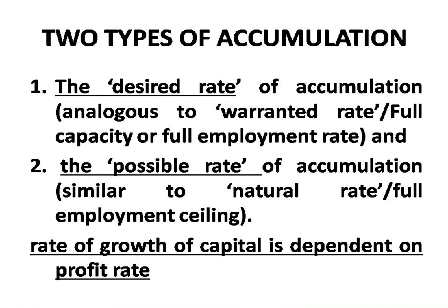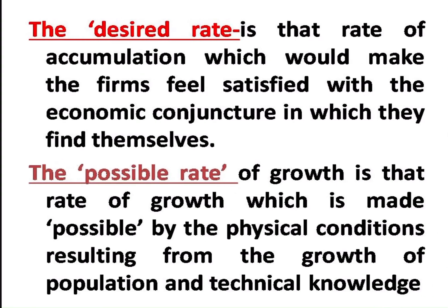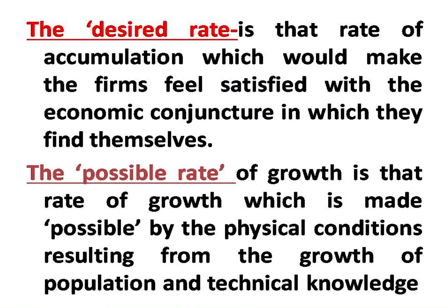There are two types of accumulation. The first is the desired rate of accumulation, which is basically the warranted rate, also called full capacity or full employment. The second is the possible rate, which is the natural rate — the accumulation ceiling set by physical conditions resulting from the growth of population and technical knowledge.